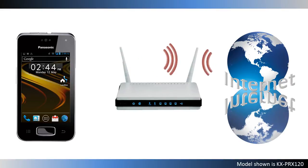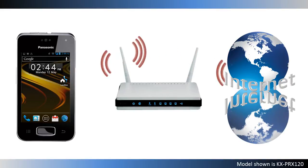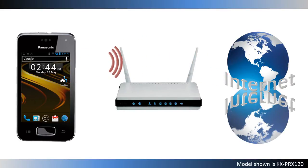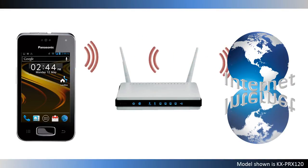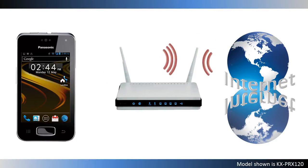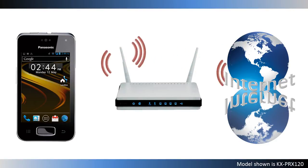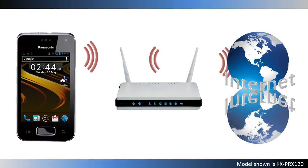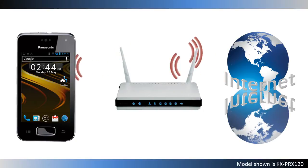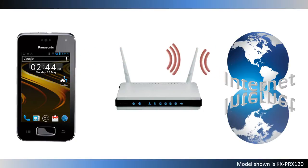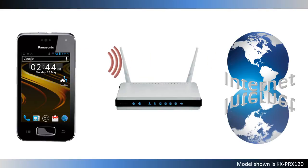If you have a wireless router and an internet connection, you can configure the handset to connect to your Wi-Fi network and access the internet for synchronizing your handset with your Google account. Use the browser app to view web pages, access your social media, download apps, etc.